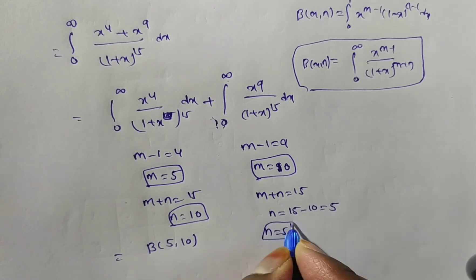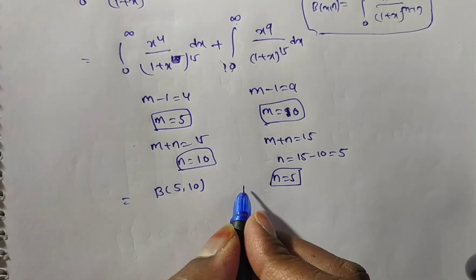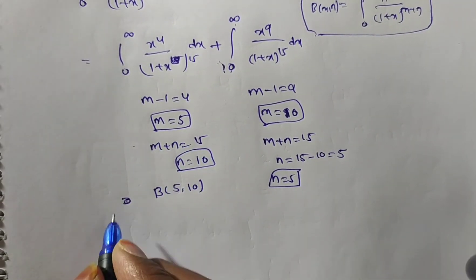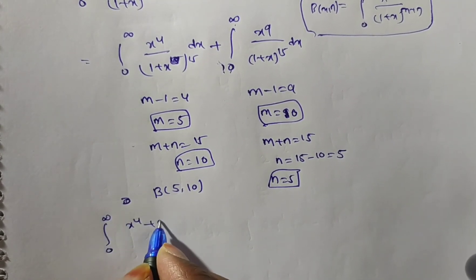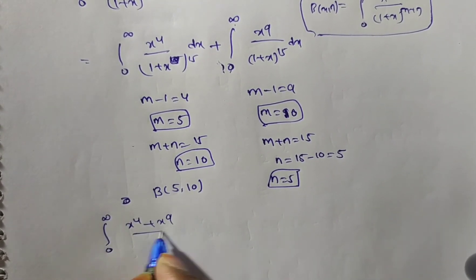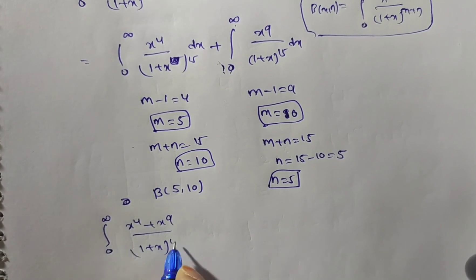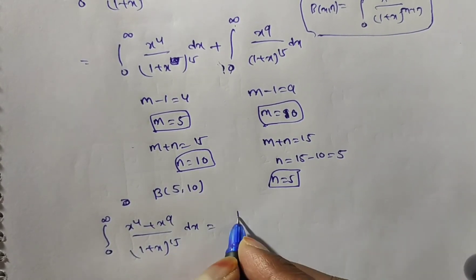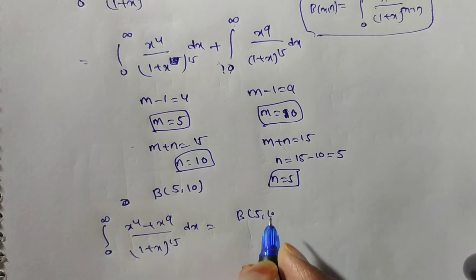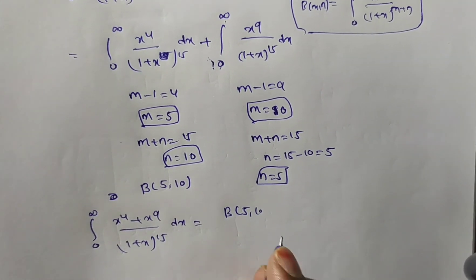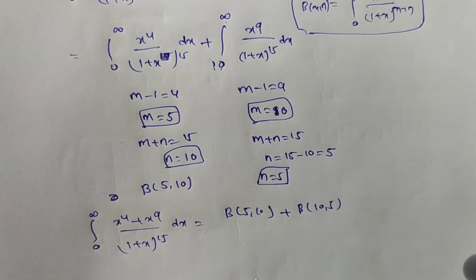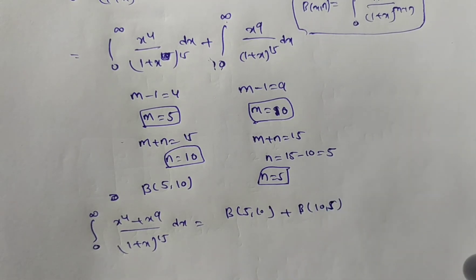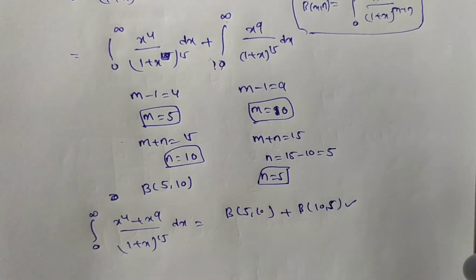So the full expression — integral from 0 to infinity of (x⁴ + x⁹)/(1+x)¹⁵ dx — is equal to Beta(5, 10) + Beta(10, 5). This is the result expressed in terms of the beta function.